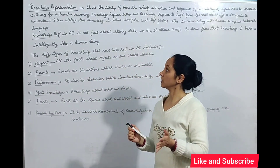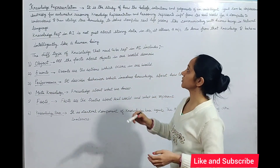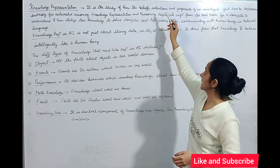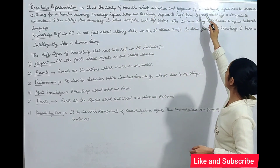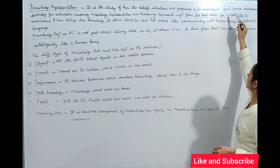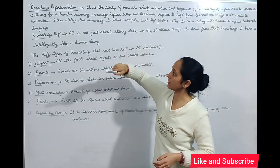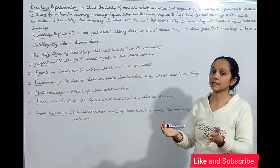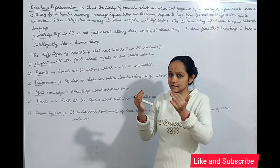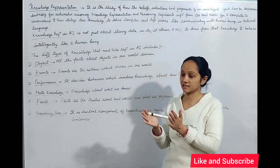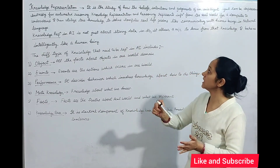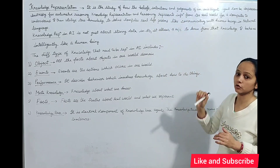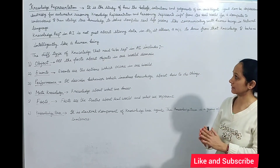Knowledge Representation is basically the study of how the beliefs, intentions, and judgments of an intelligent agent can be expressed suitably for automated reasoning. In automated reasoning, we are using the machine. We study the beliefs, intentions, and judgments of an intelligent agent.